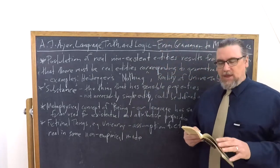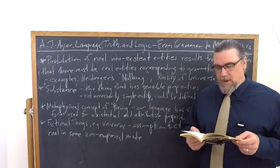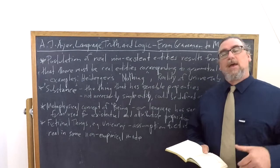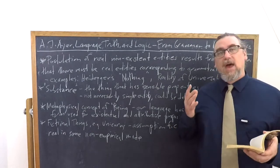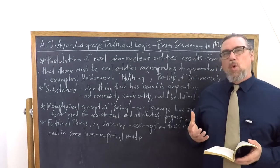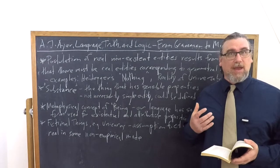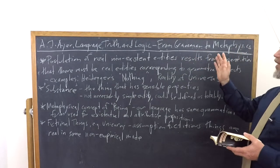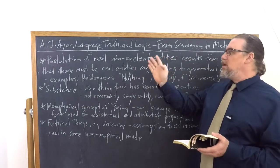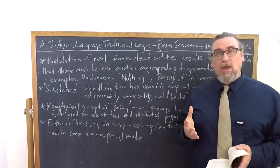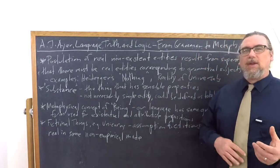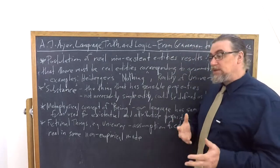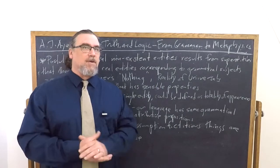After doing that, he says that what we want to do is to show how metaphysical assertions or propositions or statements come to be made. What is going on when we're doing this, and the general idea is that we're seduced by some of the strange quirks of our language. So that we take, as he says, we postulate real non-existent entities, which are resulting from the superstition that there must be real entities corresponding to grammatical subjects. So because we name something and talk about it in language, we assume there must be something corresponding to it, and we are thereby being misled or seduced by some of the features of our very own language.